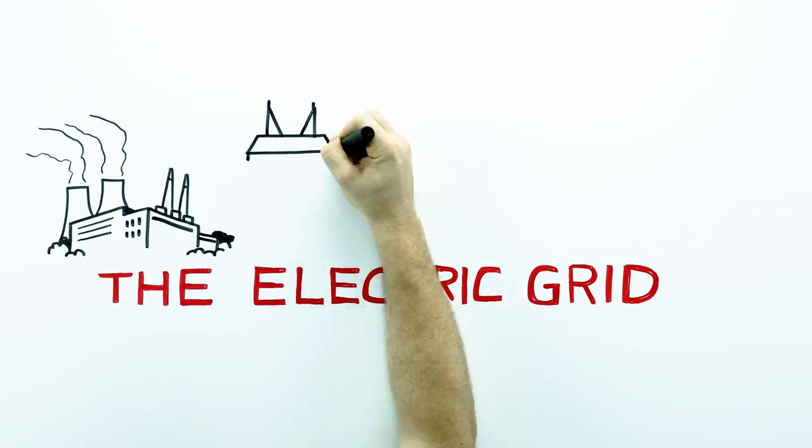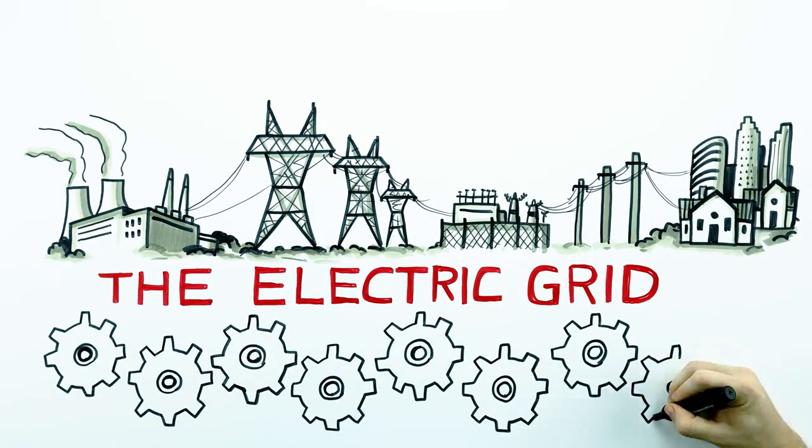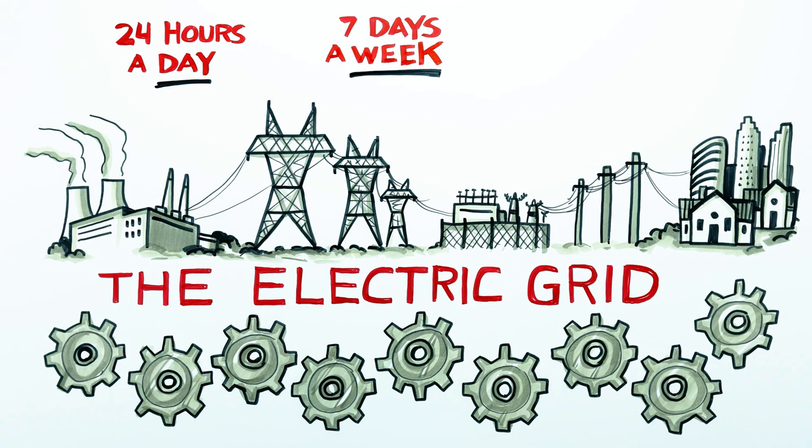The electric grid is a very large, complicated machine that is called upon to run 24 hours each day, 7 days a week, and 365 days every year. But let's start at the beginning.